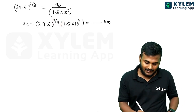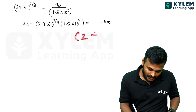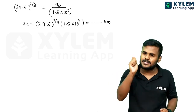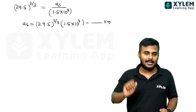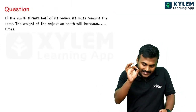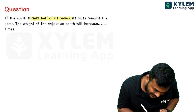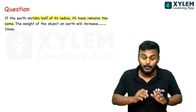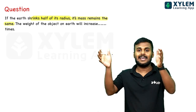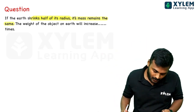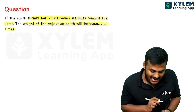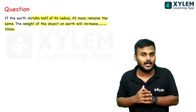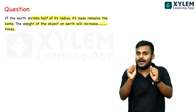This power is very simple — 2 divided by 3. So do this in the exam. If the Earth shrinks to half of its radius, the weight of the object on the Earth increases by how many times? That's the question we need to solve now.